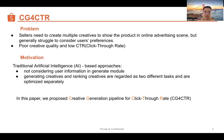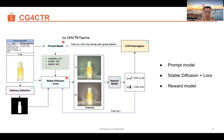In this paper, we proposed a new automated creative generation pipeline for CTR named CG4CTR, with the goal of improving CTR during the creative generation stage. The CG4CTR pipeline includes three core modules: the product model, stable diffusion model, and the reward model. Thank you.